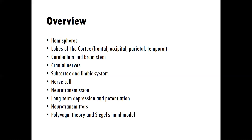We will examine the subcortex and the limbic system, which houses the structures associated with memory and emotion among other things. You're probably very familiar with the amygdala and the hippocampus, for example. We'll then explore the nerve cell, also known as the neuron — the different components and how it functions. We'll learn about neurotransmission: how one nerve cell communicates with another, and how messages are sent through the nervous system. Then we'll look at long-term depression and potentiation, which has to do with the birth and death of neurons and also of synapses.